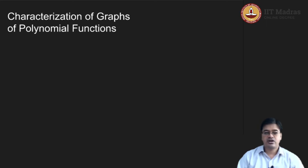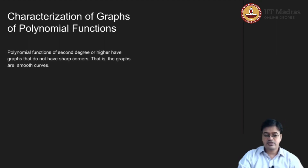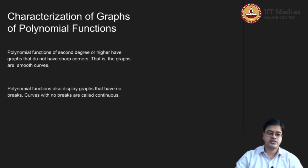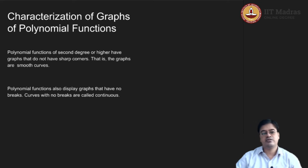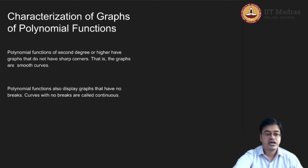Another thing is you can draw these graphs without lifting your pen — that means these graphs are always continuous. So let us list these properties. First, for polynomials of second degree or higher, the graphs do not have sharp corners; the graphs are always smooth curves. Second, polynomial functions always display graphs that have no breaks. Curves with no breaks are called continuous, and therefore the function itself is continuous.